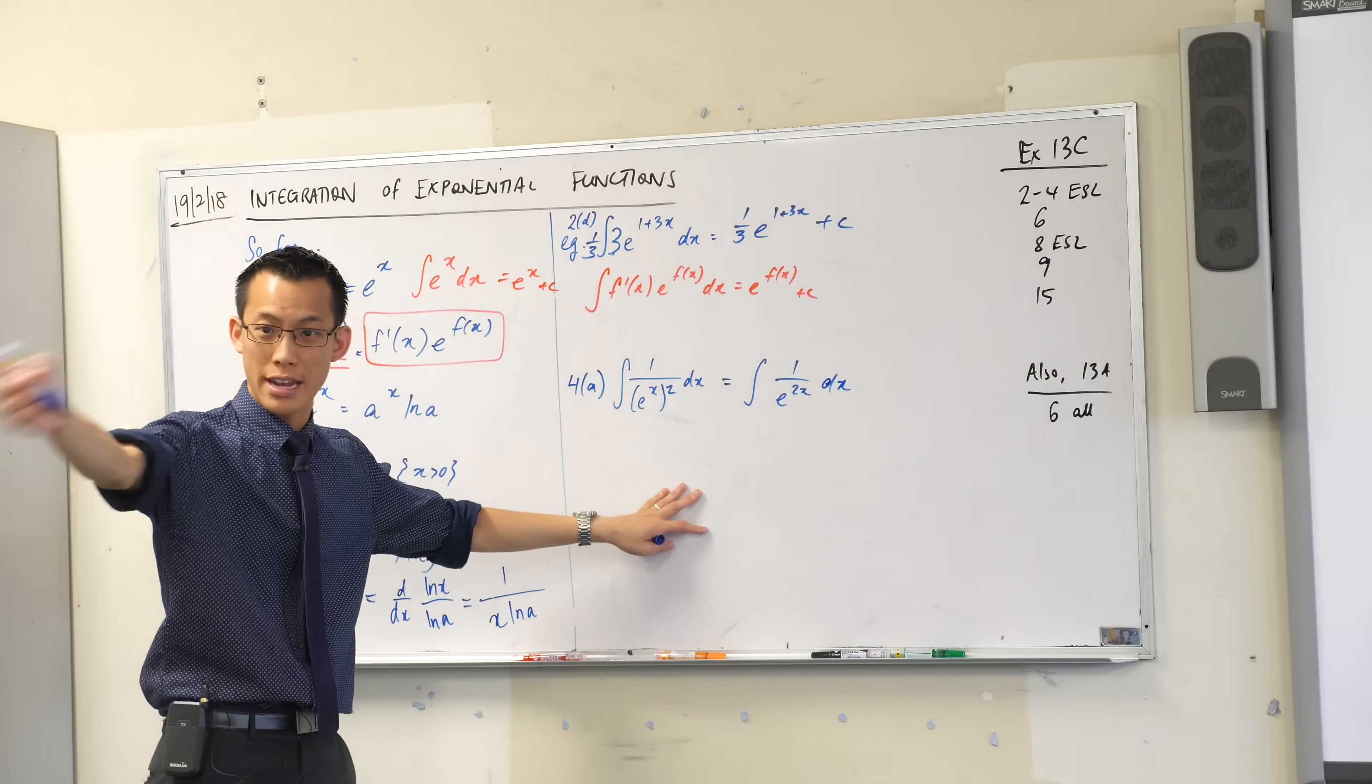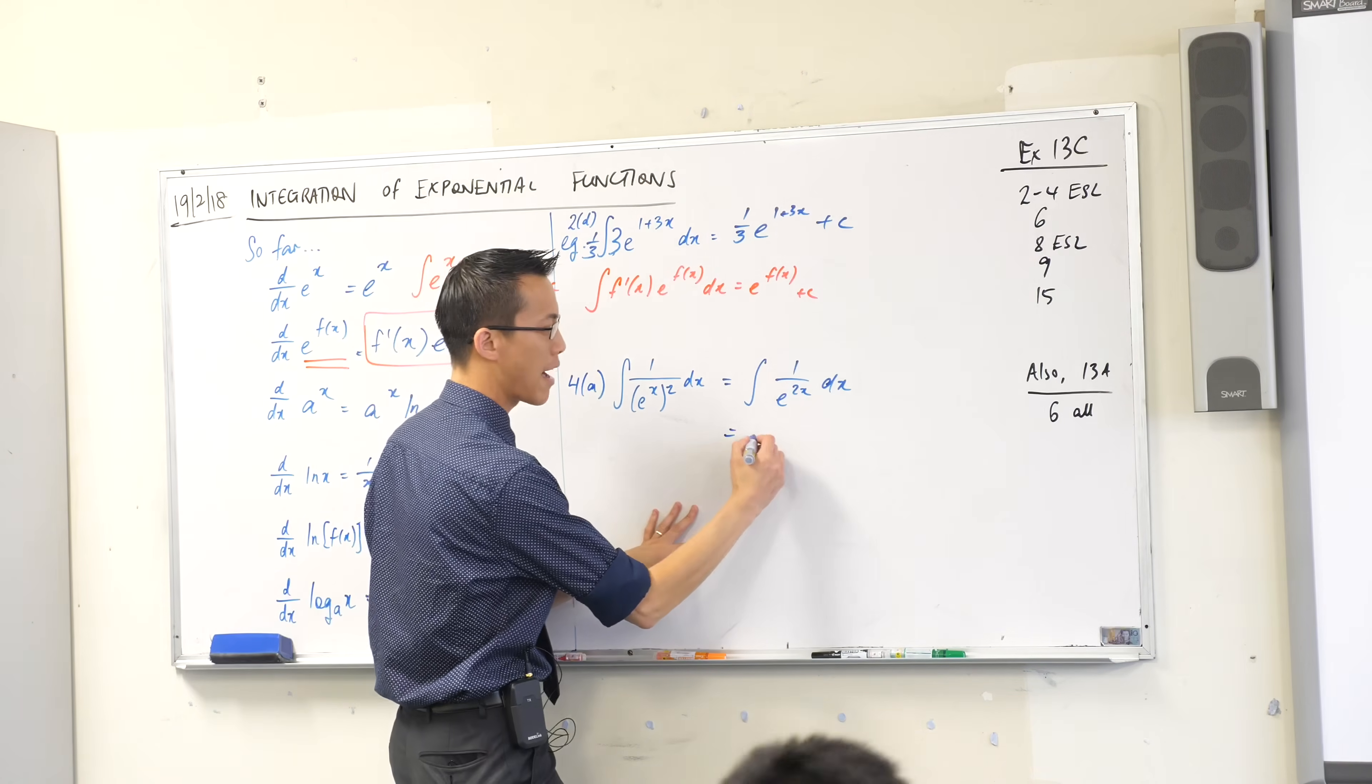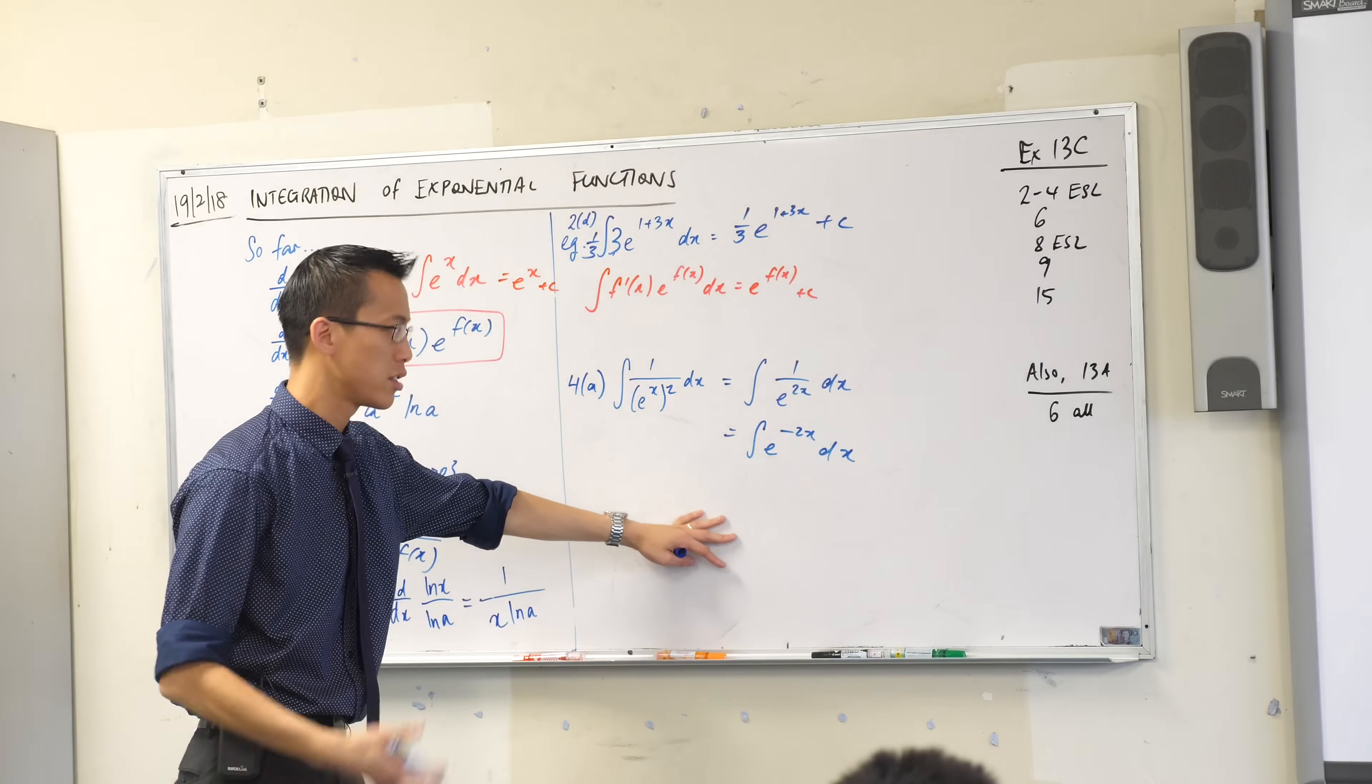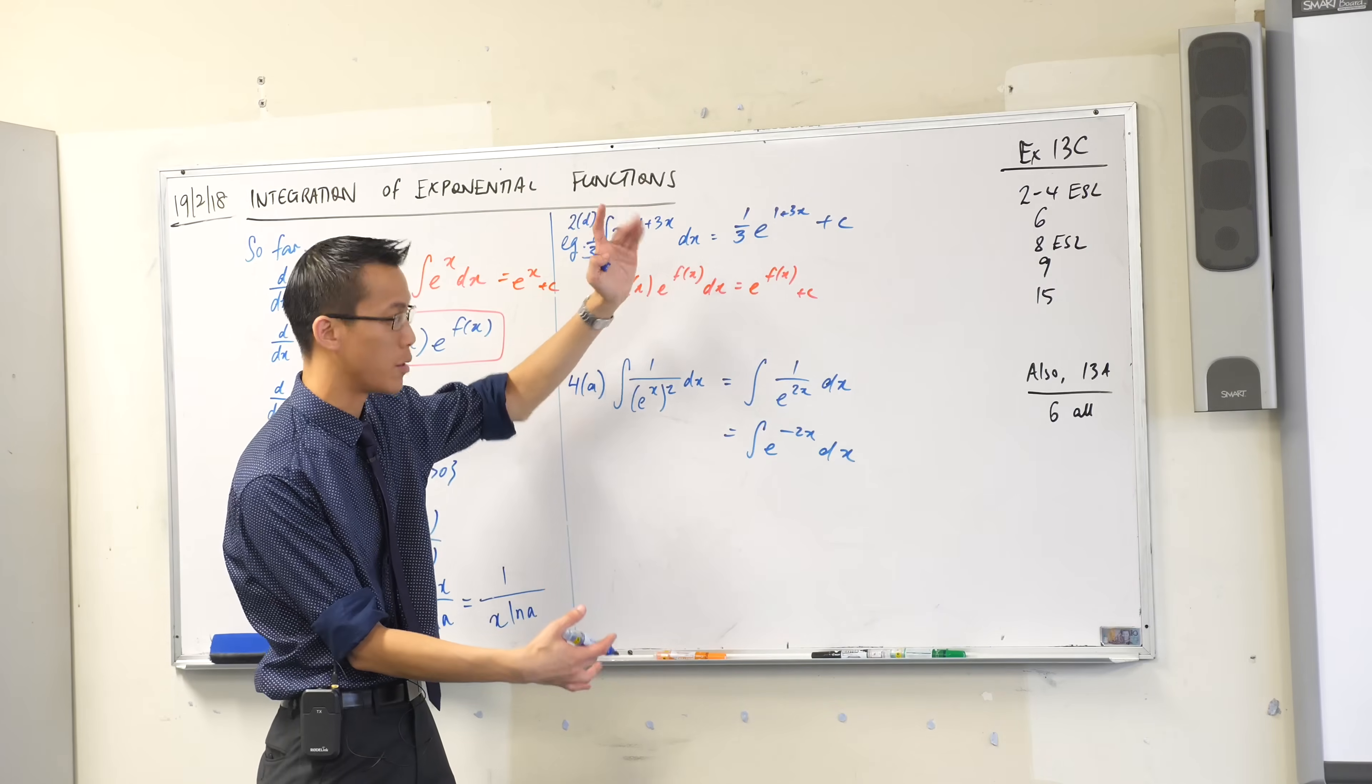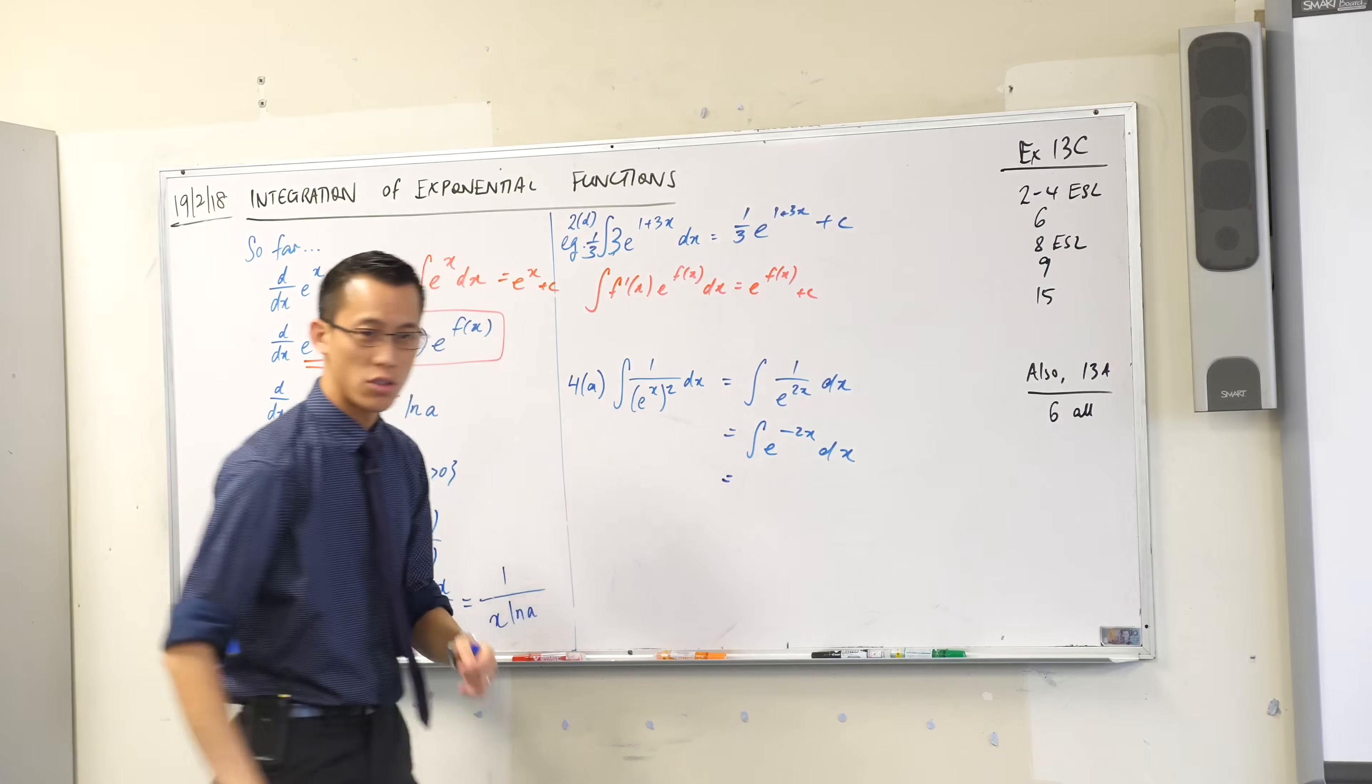But Russell saw the next step already which is that this is on the denominator, I want it up the top so I can write it with a negative index. Usually we don't like negative indices because they're gross and awkward to work with but with calculus, they're much better.